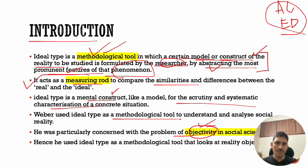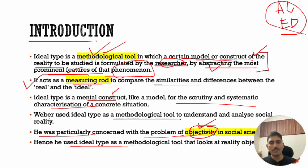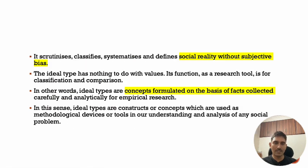Weber was also concerned with the problem of objectivity, but he said you need to keep sociology and social sciences objective to legitimize them as a discipline. But that doesn't mean you completely separate values from it. You can use values and still remain objective — for that you need to create ideal types for any problem. Using ideal types, you can objectively study anything in sociology. So he developed the concept of ideal type as a methodological tool that looks at reality objectively.